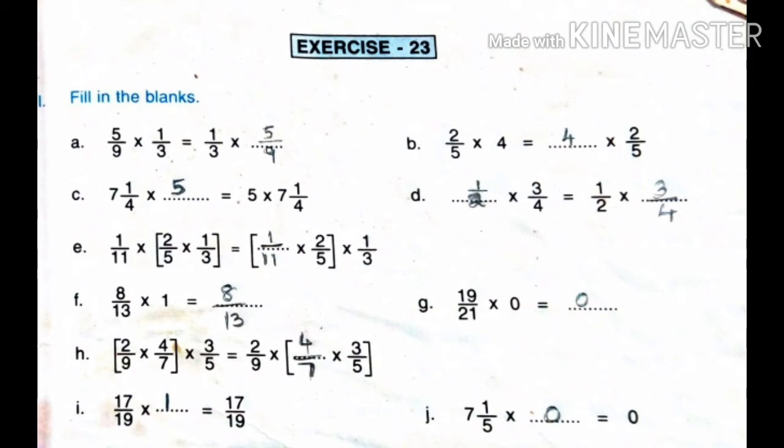Next is the multiplication property of 0. The product of any fraction number multiplied by 0 is always 0. For example, if we multiply 1/1 into 0, we get 0. Sum j: 19/21 into 0 equals 0. And 7 and 1/5 into 0 also gives 0. So the missing dash is 0.